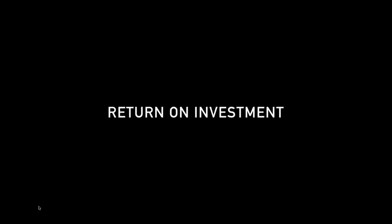They were successfully able to print their gripper jaws. Let's look at their return on investment. When they were machining that part in-house, the cost was around $315. The all-up cost on the Metal X is $11.45 per part. The savings per part is $303, which is 96.4% against their traditional manufacturing mechanism.